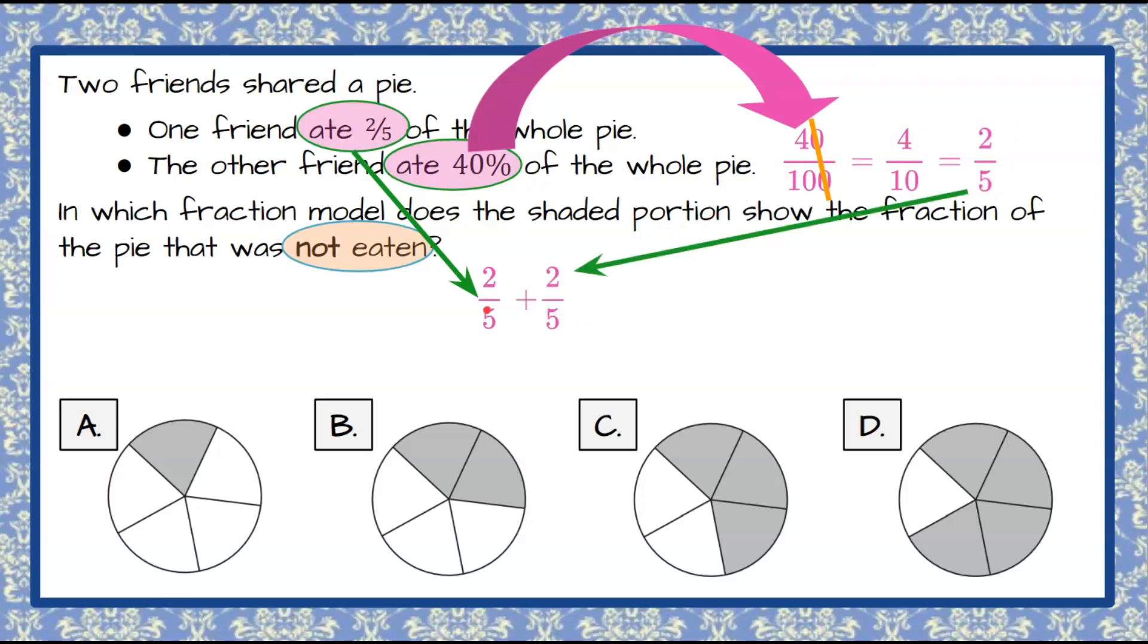So if we add what one friend ate and the other friend ate together, they ate two plus two, which is four-fifths, were eaten. So four of the five pie slices were eaten, telling us that we had one-fifth of the pie not eaten, meaning one out of the five slices was not eaten.